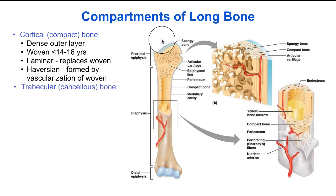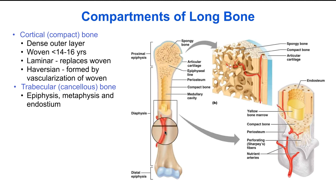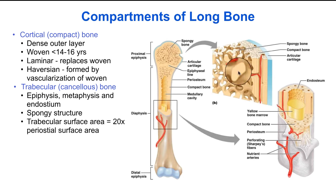There's also trabecular or cancellous bone, found in the epiphyses, in the metaphysis, and on the inner surface of the endosteum of the diaphysis. In contrast to compact bone, it has a spongy structure. The elements of this spongy structure are called trabeculae, and the trabecular surface area is about 20 times greater than the periosteal surface area.